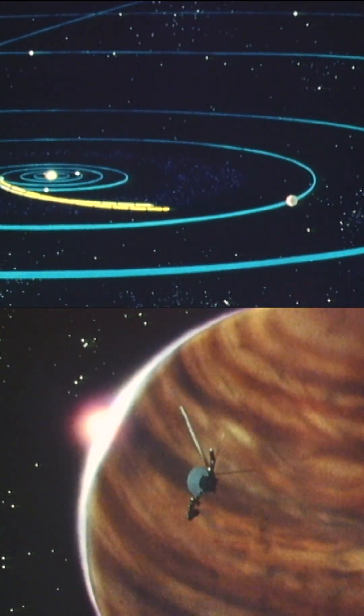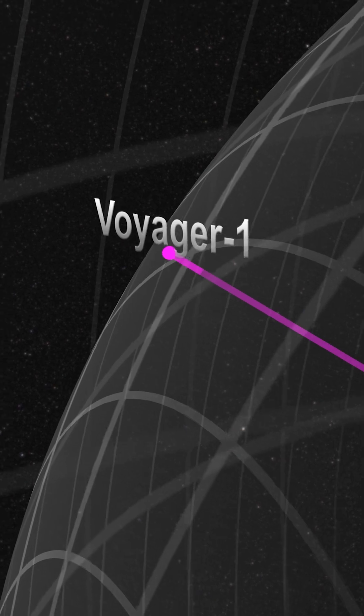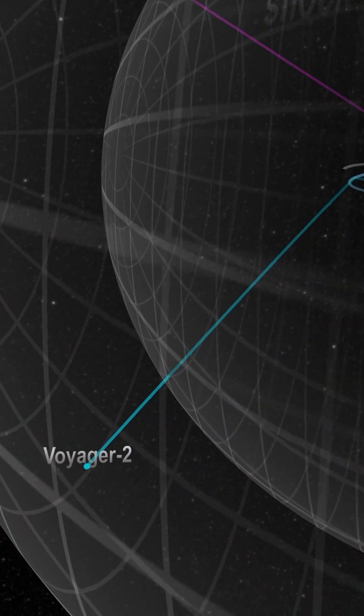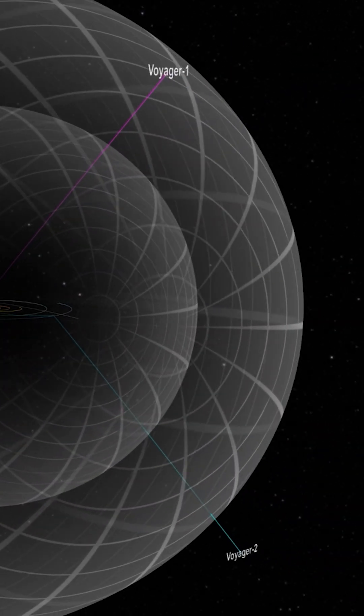Yet, we know so little about our own home. What is its true shape? Is it a sphere? Or is it stretched out like a comet's tail as we journey through the galaxy?